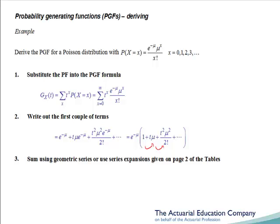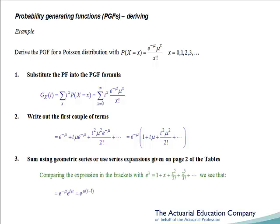So we'll need to look at the standard series expansions given in the tables. Comparing the expression in the brackets with the series expansion of e to the x, which is 1 plus x plus x squared over 2 factorial and so on, we see that this series is the same as that in the brackets but with x equal to t mu. So we sum to e to the minus mu times e to the t mu. Multiplying exponentials together, we add their powers, giving e to the minus mu plus t mu. Taking out the common factor of mu, we have e to the mu times t minus 1.